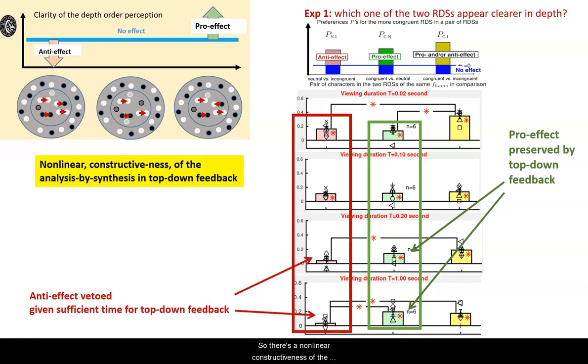So there's a nonlinear constructiveness of the analysis by synthesis in the top-down feedback. It preserves the reverse depth signal when they are beneficial to perception, but vetoes it when they are detrimental.